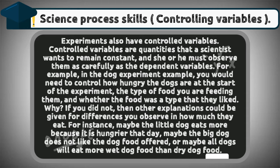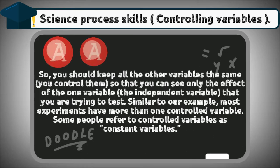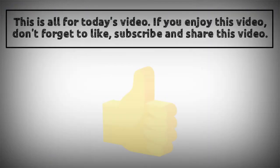For instance, maybe the little dog eats more because it is hungrier that day, maybe the big dog does not like the dog food offered, or maybe all dogs will eat more wet dog food than dry dog food. So you should keep all the other variables the same — you control them so that you can see only the effect of the one variable, the independent variable, that you are trying to test. Similar to our example, most experiments have more than one controlled variable. Some people refer to controlled variables as constant variables.